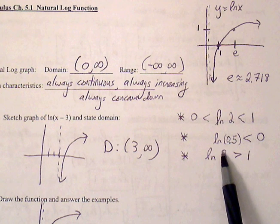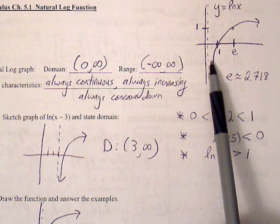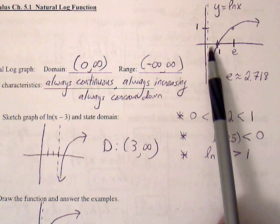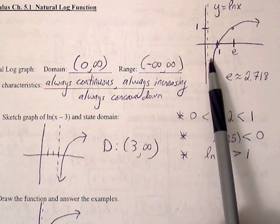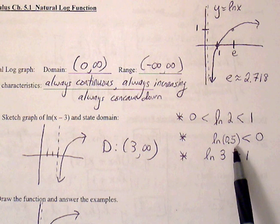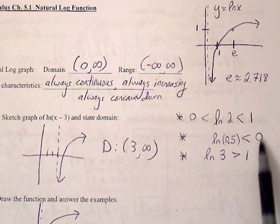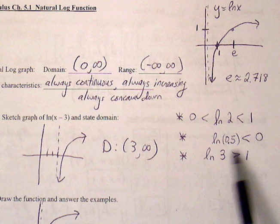And natural log of 0.5. We know 0.5 sits somewhere for our natural log graph. Our 0.5 is going to be somewhere here below the x-axis. So we know that natural log of 0.5, even though we may not know that exact value, we do know ballpark value has to be in the negatives. It has to be less than 0.